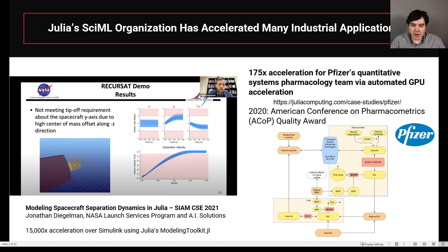All of this work is part of the Julia SciML organization, which has accelerated many different industrial applications. One video that I would point to is John Dingelman's video from SIMCSE 2021, where he showcased that changing from using Simulink to Julia's ModelingToolkit.jl ended up giving about a 15,000 times acceleration in NASA's Launch Services applications. So there's some real speed-ups that people are getting, even without the machine learning, just by changing to our suite of software.